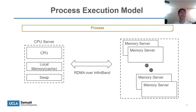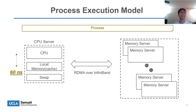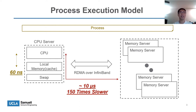Let me introduce the process execution model in this work. When an application is launched in the disaggregated cluster, the process can span multiple servers. We assume processes span only one CPU server and multiple memory servers. We launch one process, but it's easy to extend to multiple processes on multiple CPU servers. The process runs on the CPU server. When the process memory footprint exceeds the capacity of the local cache, its data will be swapped out to memory servers. The local cache access latency is around 60 nanoseconds, while memory access latency to remote memory servers reaches up to 10 microseconds, which is 150 times slower than accessing the CPU server's local cache.